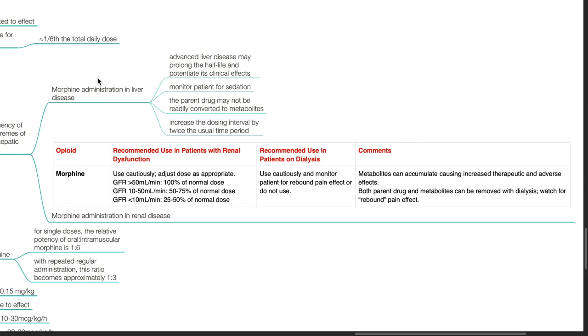Morphine administration in renal disease. Use cautiously and adjust the dose. For GFR of more than 50 mls per minute, allow 100% of normal dose. For GFR of 10 to 50 mls per minute, use 50 to 75% of normal dose. For GFR of less than 10 mls per minute, use 25 to 50% of normal dose.